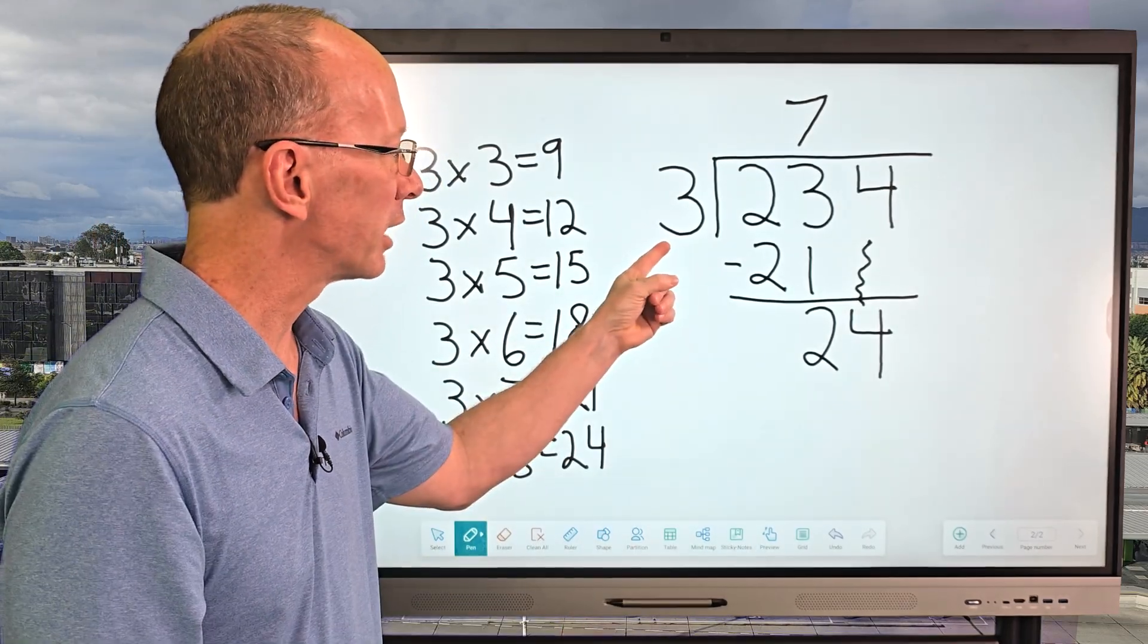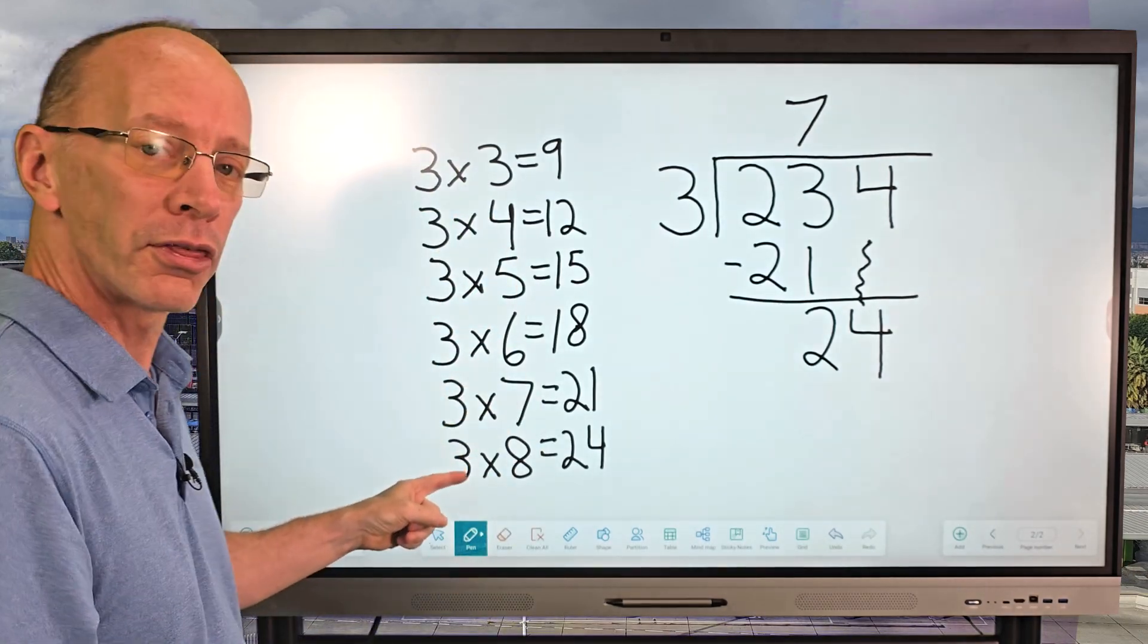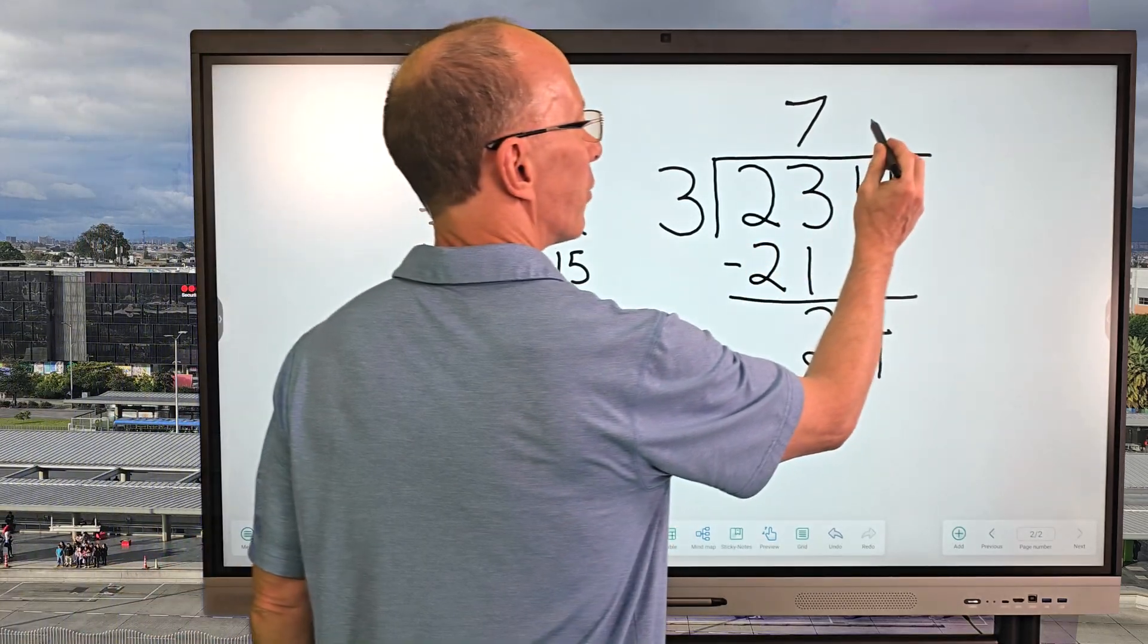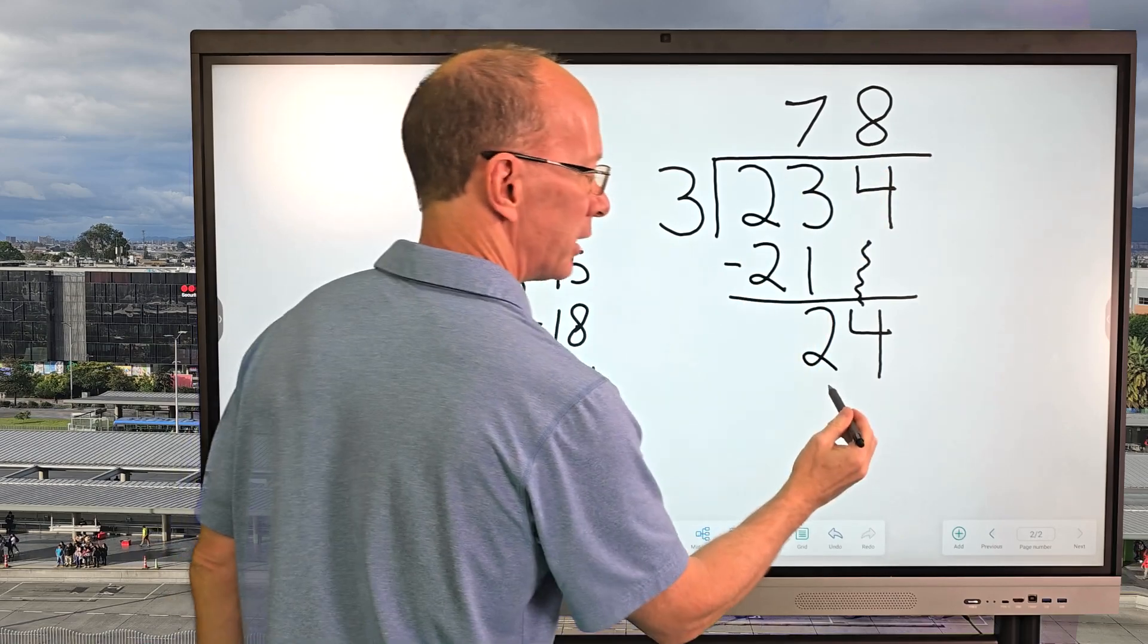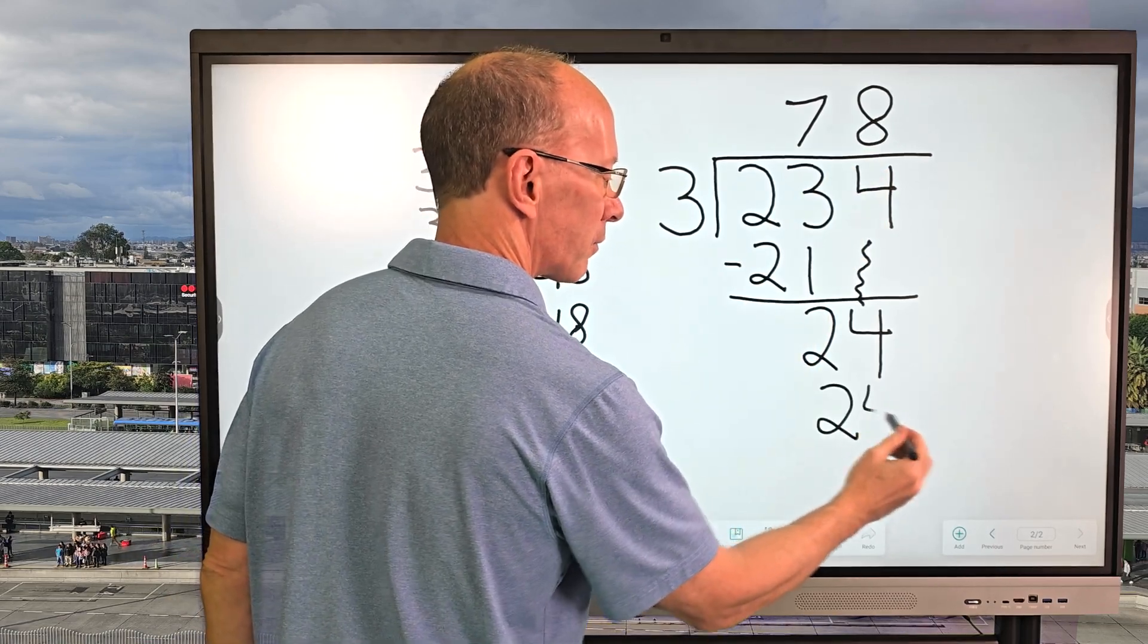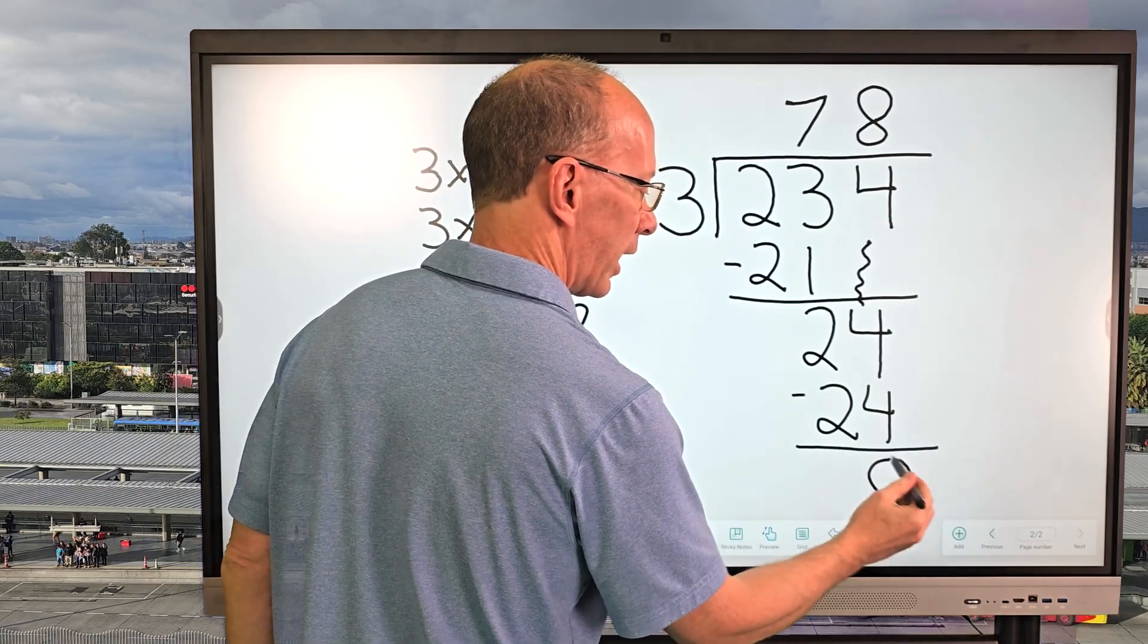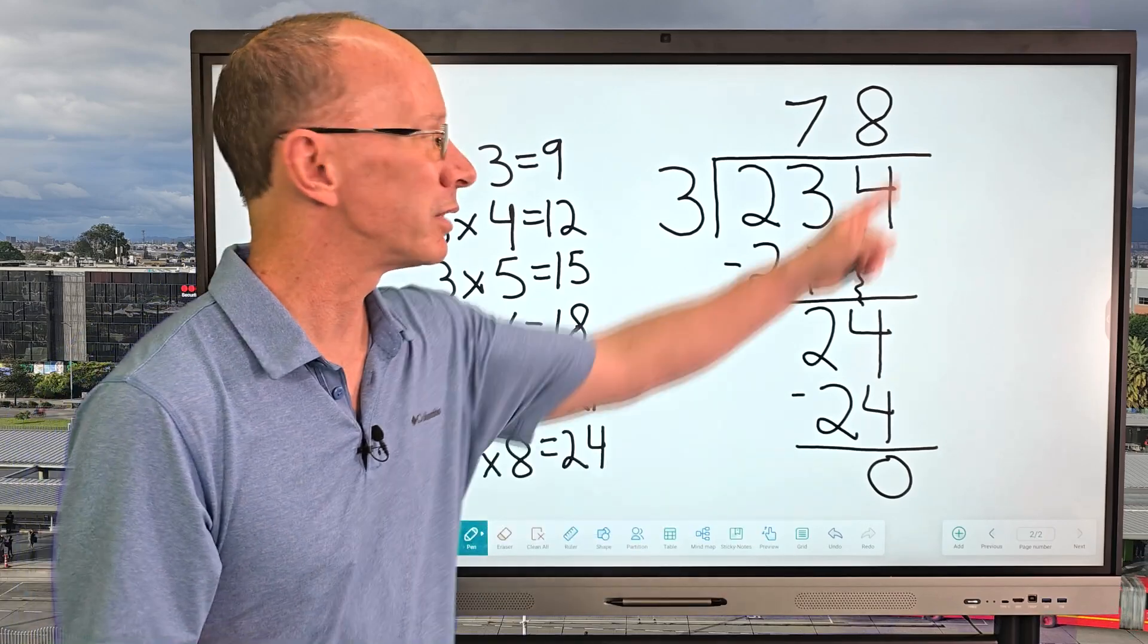So how many times can I put 3 into 24? Let's see here. Well, look right here, 3×8=24. So I'm going to go ahead and write the 8 right here. And then 8×3=24. Subtract. And now I have zero, a remainder of zero. And you do not need to put that up there.